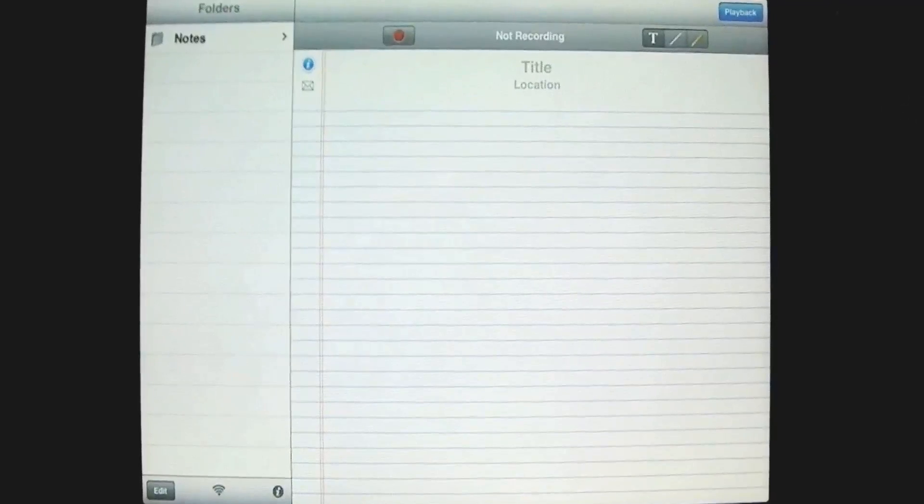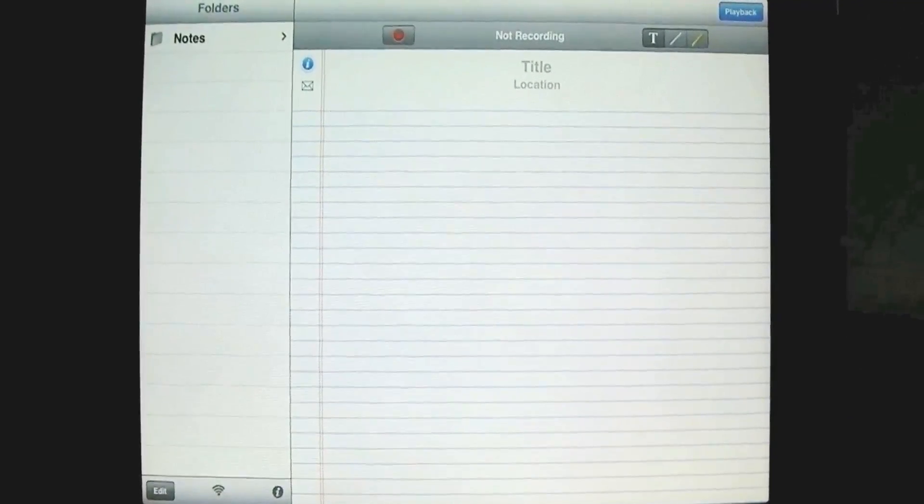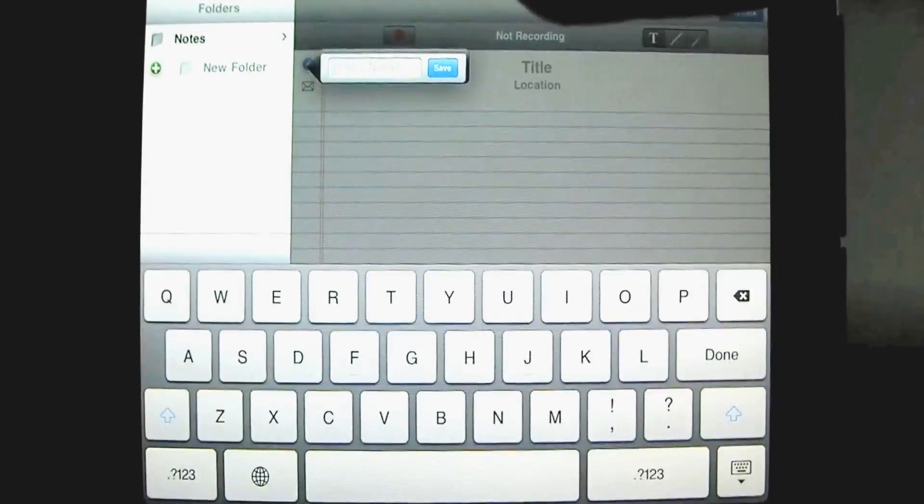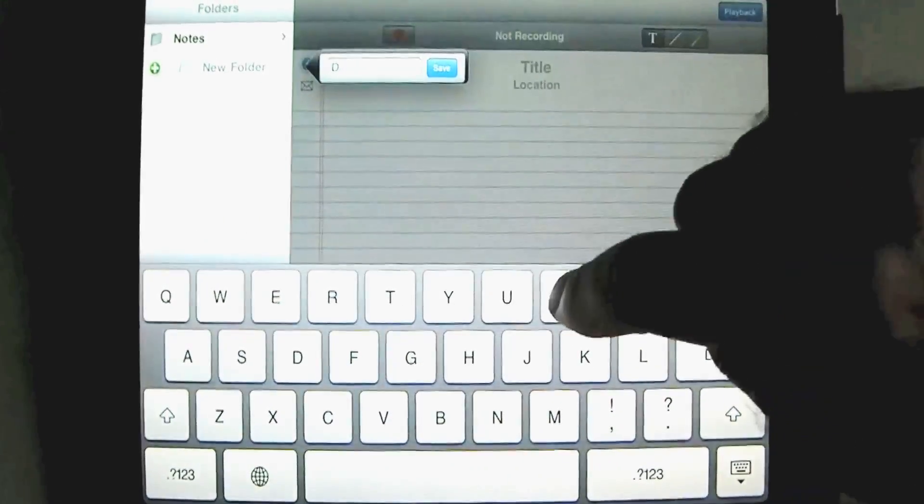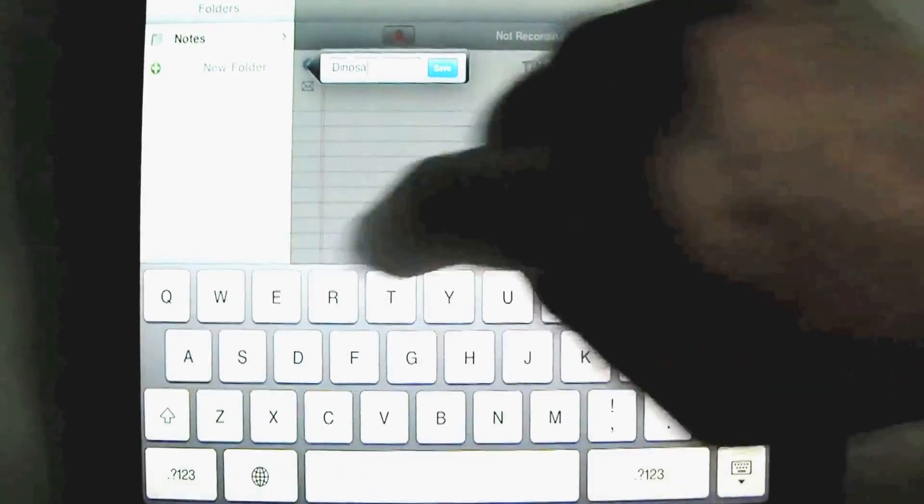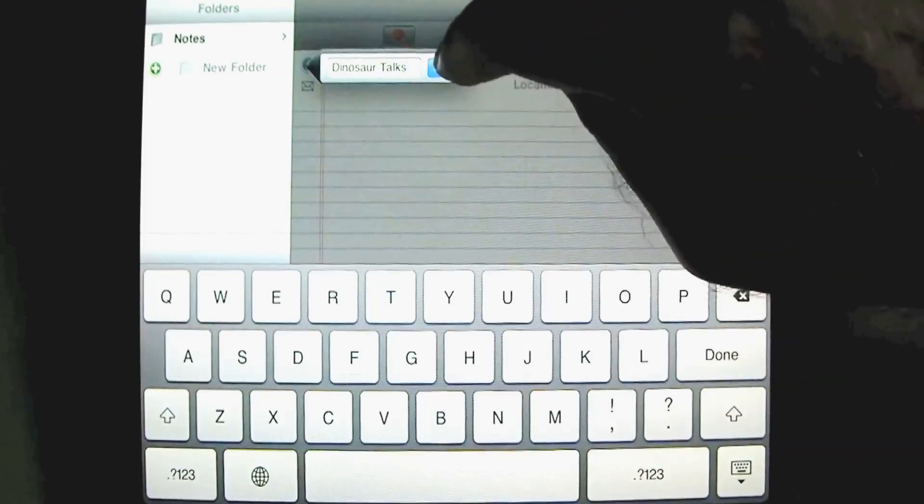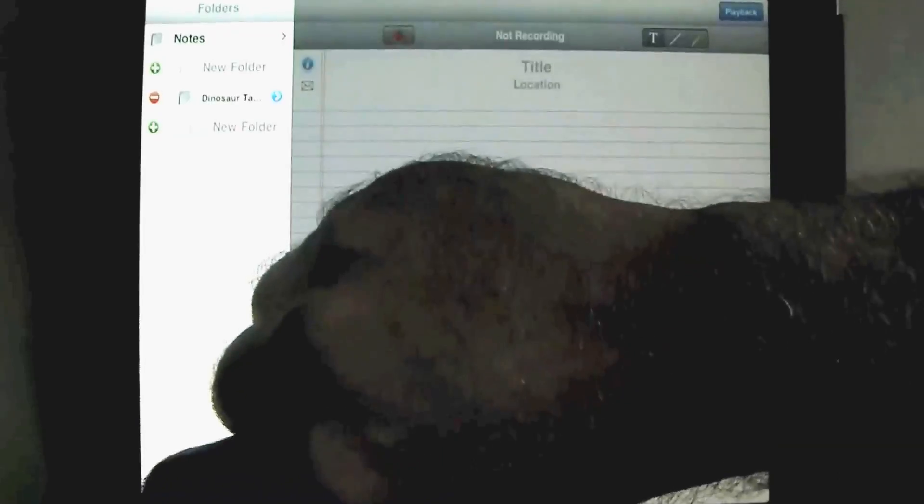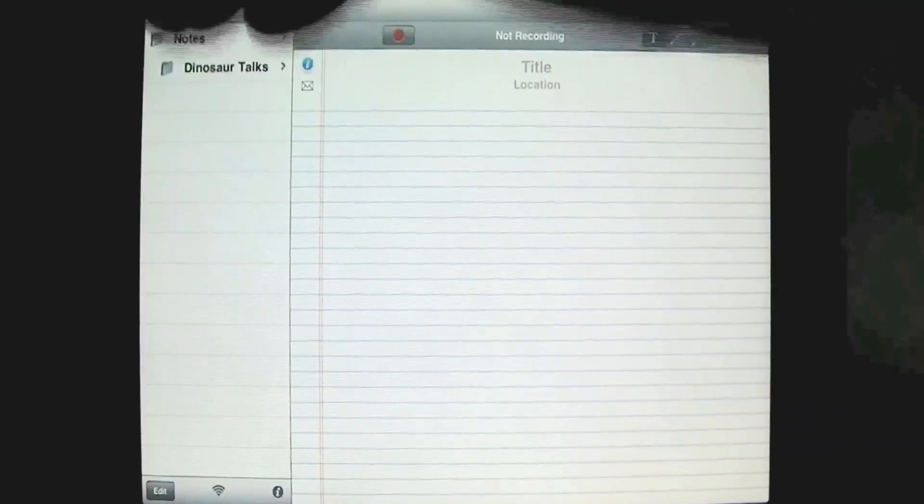So what if we want to make a new folder that's especially for all of our dinosaur lectures that we're going to be attending every week? So without selecting anything here, we just hit edit, and new folder? Yes. The folder's name is going to be Dinosaur Talks. And I'll hit save. So I'll just hit done, and now we have Dinosaur Talks in the notes folder.